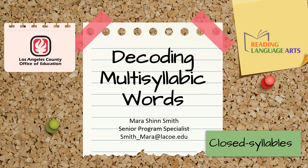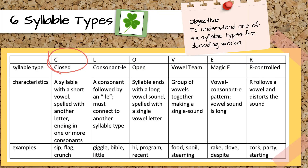This module will focus on closed syllables. Typically, words fall into six different syllable type categories. An easy acronym to remember these six syllable types is CLOVER. Identifying the six syllable types can be useful for students when decoding unfamiliar words. This module will focus on one specific type: closed syllables with multisyllabic words.